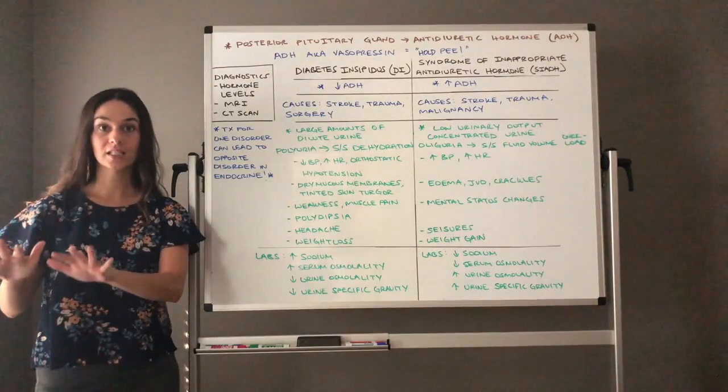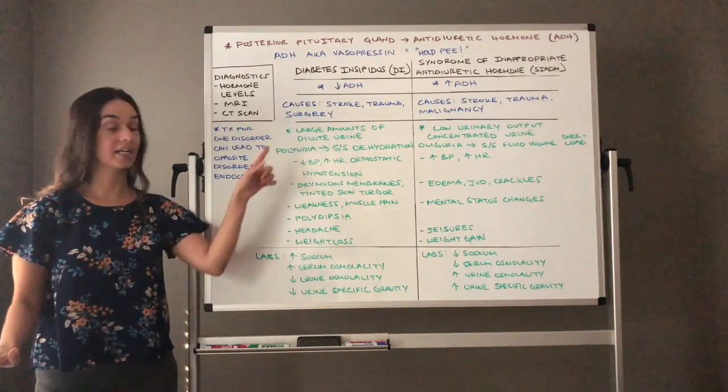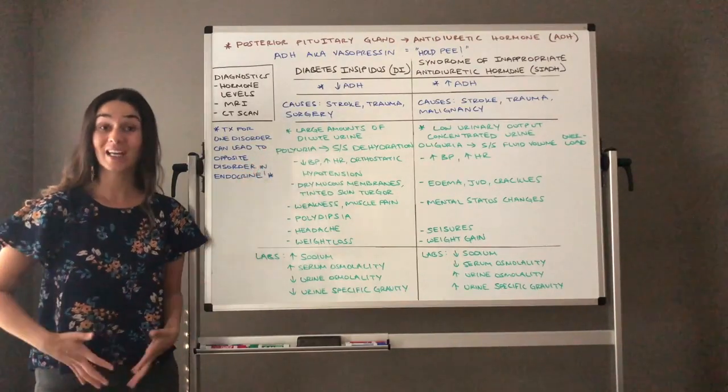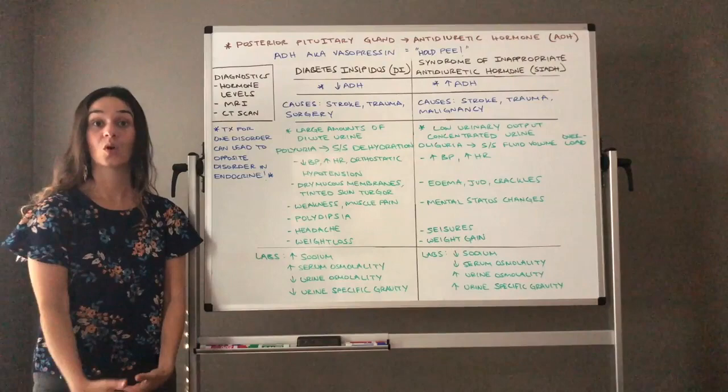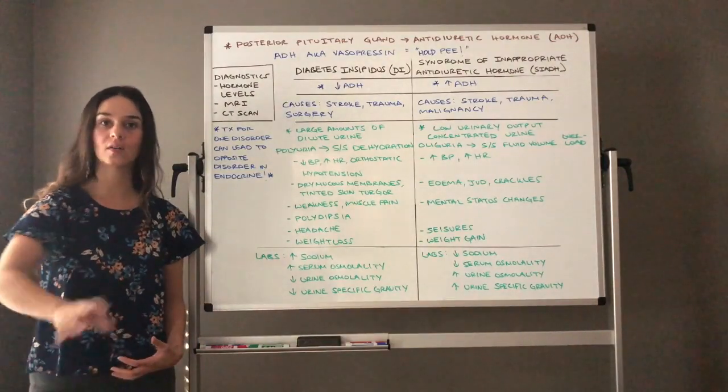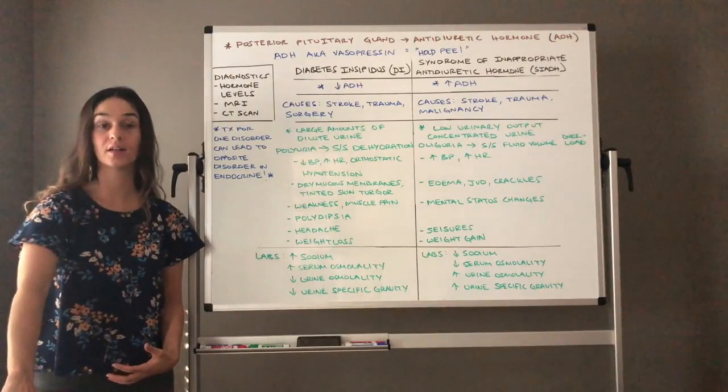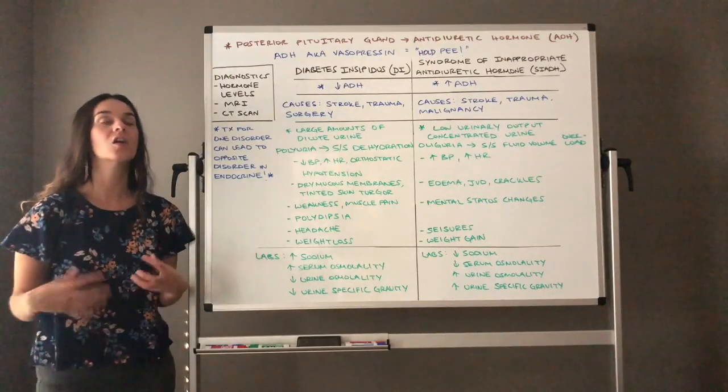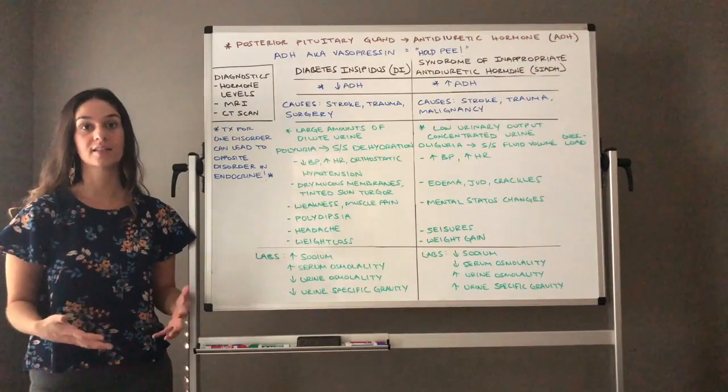If we have really low levels of ADH, like diabetes insipidus, we have no hormone to tell us you need to reabsorb that water. So it's letting all that water out into our urine, causing large amounts of dilute urine for these clients.